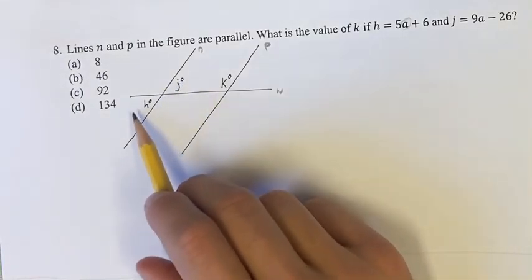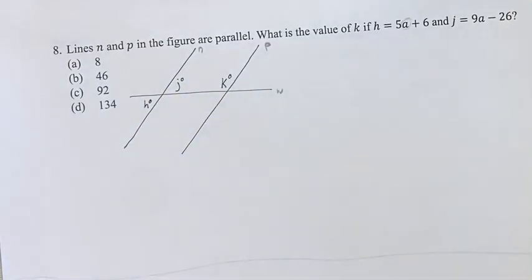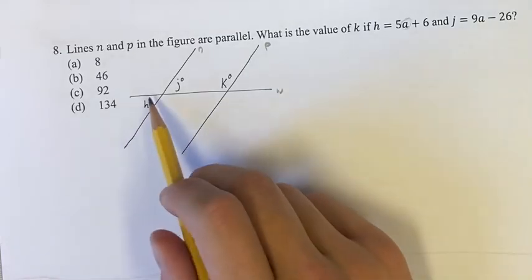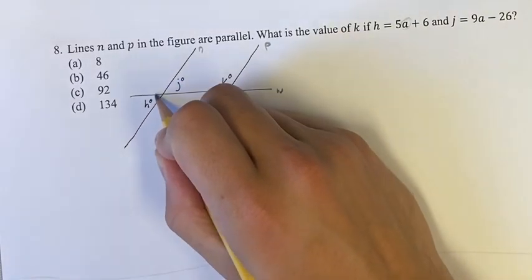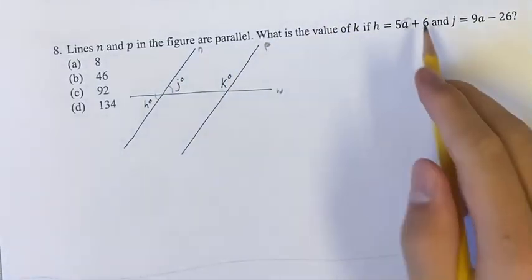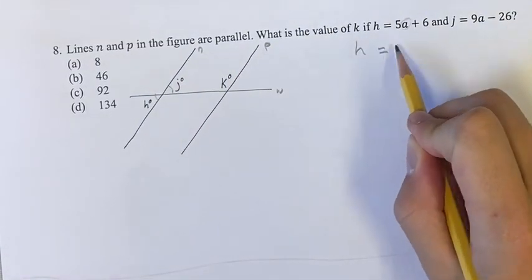If we look here, these are what's known as vertical angles. And what you have to know is that vertical angles are always equal. So these are splitting these two lines, so we're just going to say h is equal to j.